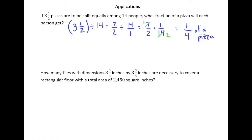The second example is a little bit of a tricky one. It says: how many tiles with dimensions 8¾ inches by 8¾ inches are necessary to cover a rectangular floor with a total area of 2,450 square inches? Since we're given the floor area in square inches, to figure out how many tiles we need, we really need to know the area of a single tile.